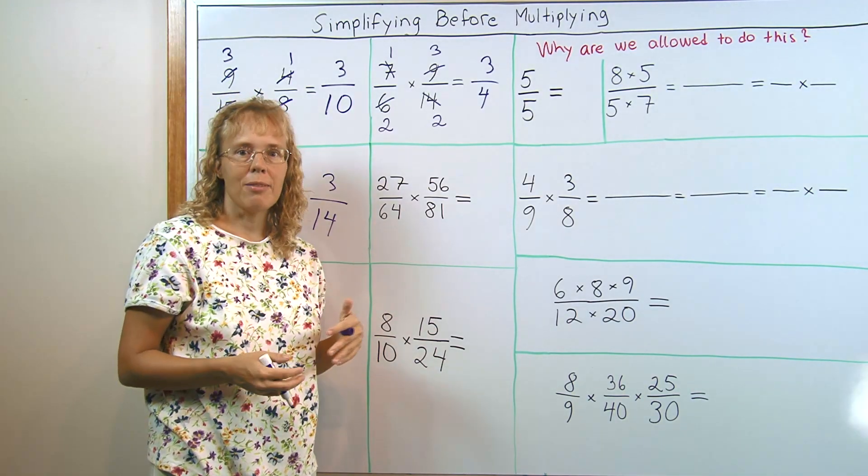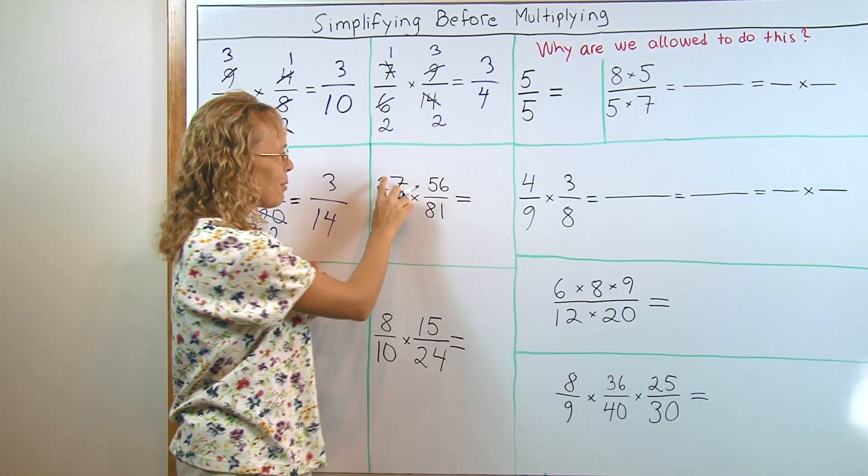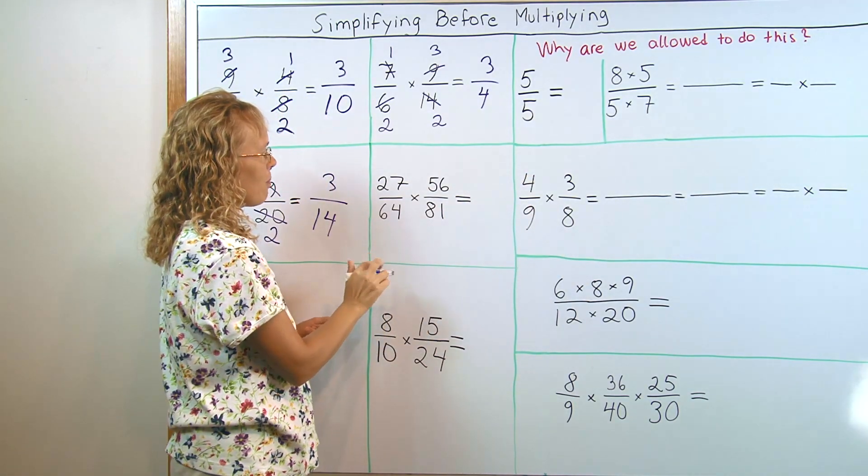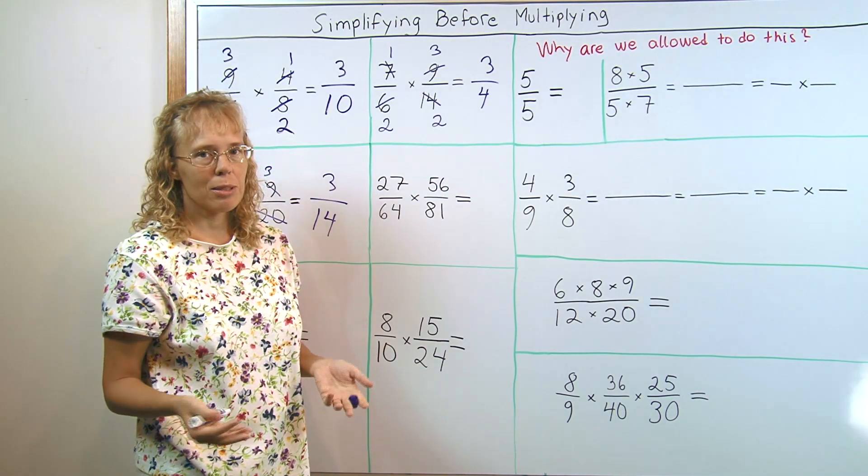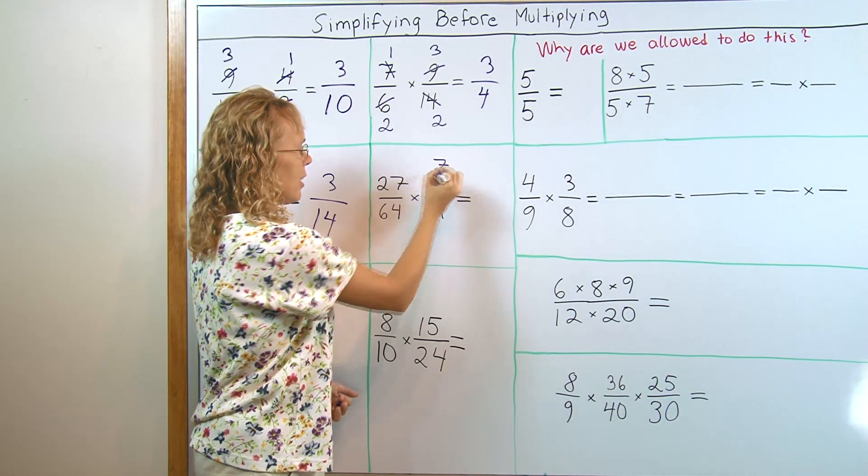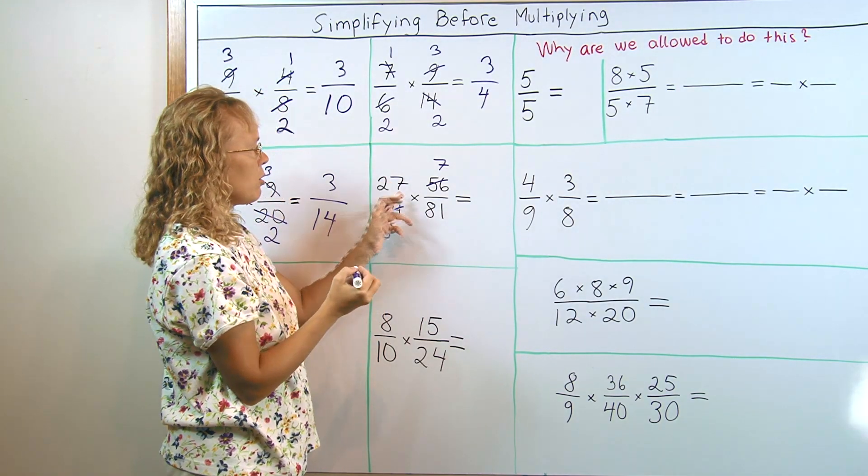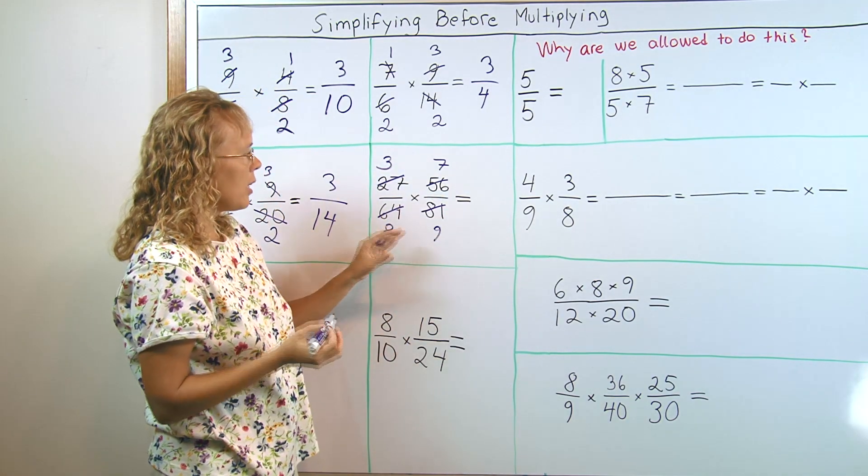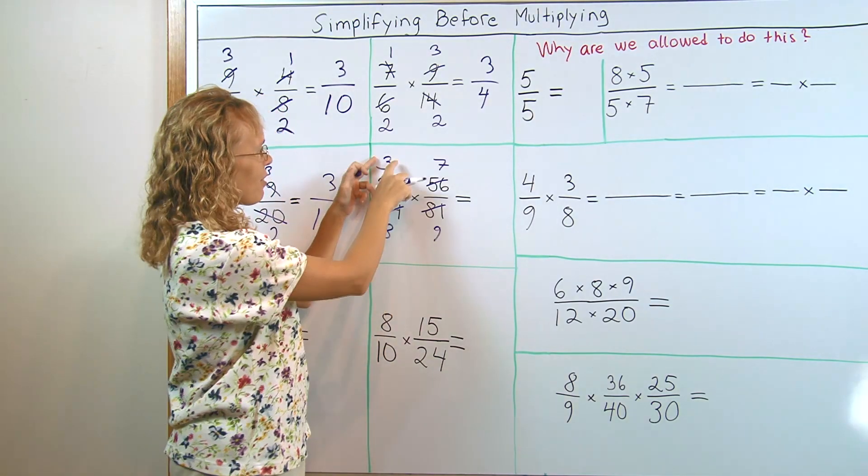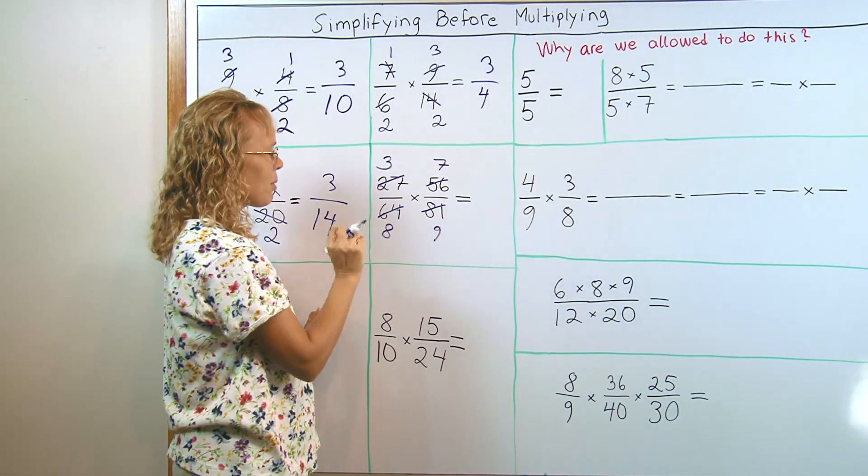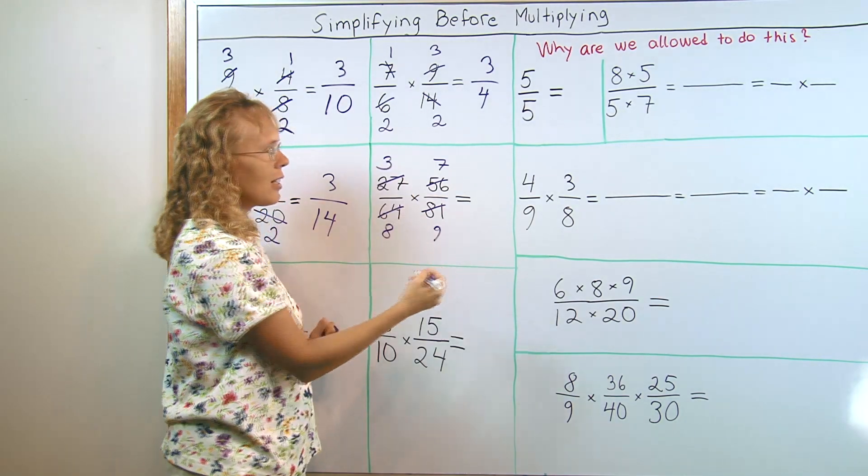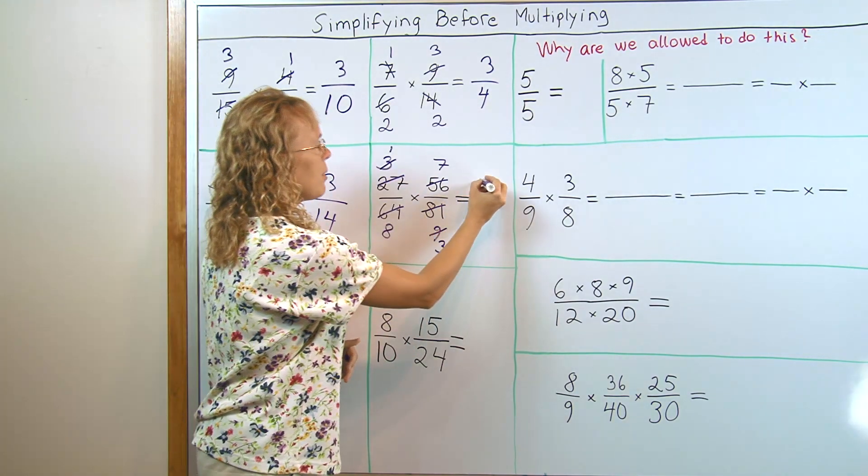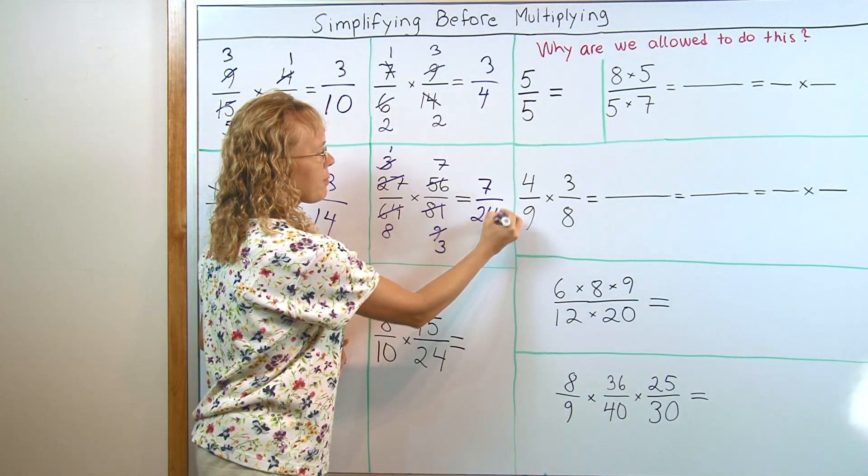Here the numbers look bigger and you definitely don't like the idea of multiplying them without simplifying first, because you would get quite big numbers here. But let's see what we can do. 64 and 56 are both divisible by 8. I get 7 here, 8 here. And then these two numbers are divisible by 9. I get 9 here and 3 here. And now I can still simplify, because I have 3 here and 9 here. I can still simplify one more time. Both 3 and 9 are divisible by 3. I get 1 here and 3 here. And now 1 times 7 is 7 and here 8 times 3, 24. All done.